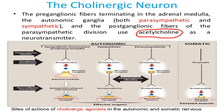The cholinergic neurons include preganglionic fibers terminating in the adrenal medulla. At the autonomic ganglia, we have both parasympathetic and sympathetic neurons. On the postganglionic fibers, the parasympathetic division uses acetylcholine as neurotransmitter. When sympathetic innervation of the adrenal medulla occurs, acetylcholine is released and the receiving receptor is the nicotinic receptor.